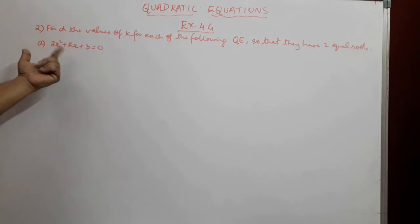We need to find the value of k and we have been given that we get equal roots for this particular quadratic equation, which means the discriminant should come equal to 0.